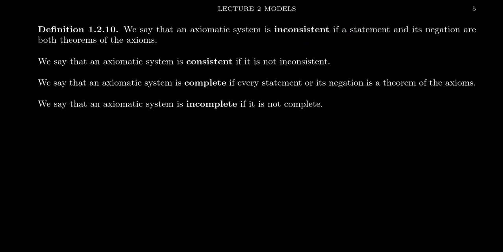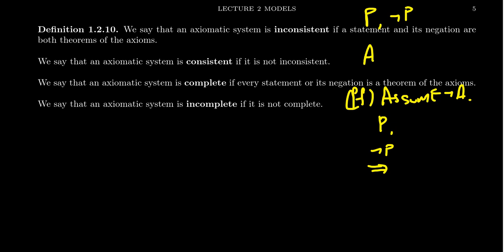If P and not-P are both theorems, then in fact every statement is both true and false. This follows by a proof by contradiction: to prove statement A, assume not-A; then use P and not-P to get a contradiction, concluding A. Since A was arbitrary, you could do the same to prove not-A. So in an inconsistent system, every statement is true and every statement is false, making the axiomatics completely useless.